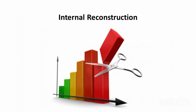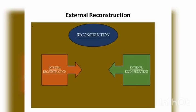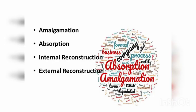The fourth term is external reconstruction, which means a new company is formed to take over the business of an existing company. The new company is created with the intention of purchasing an existing company. The existing company goes into liquidation, and its assets and liabilities are taken over by the newly formed company. In external reconstruction, a new company is floated to take over the business of the vendor company, which is then wound up.